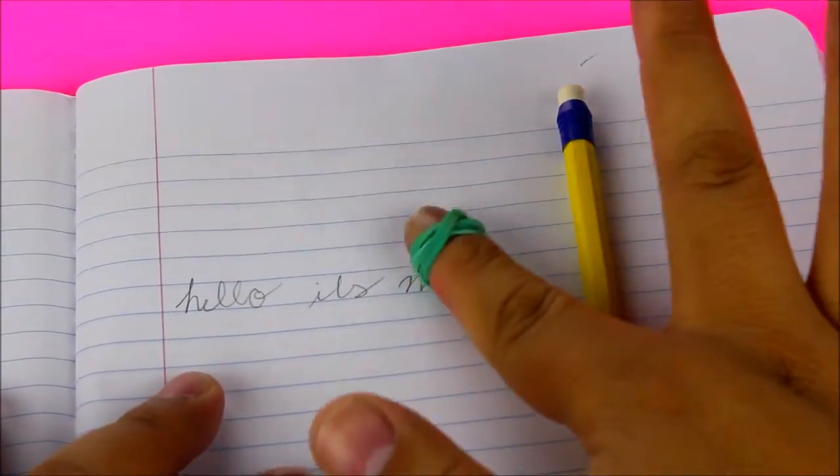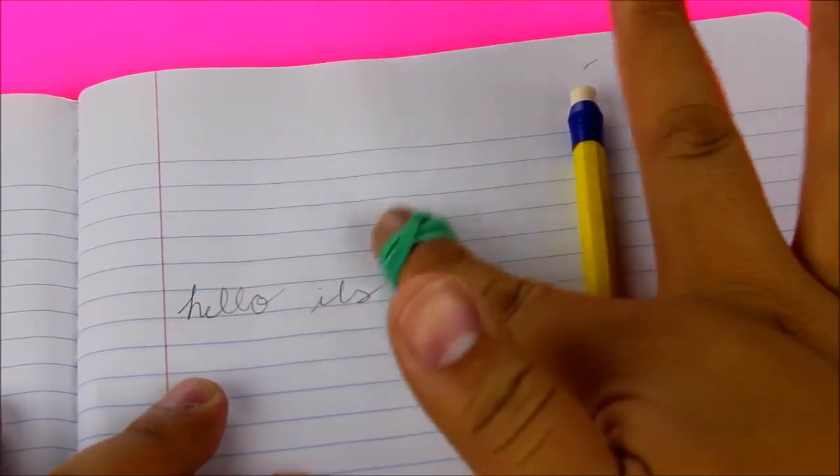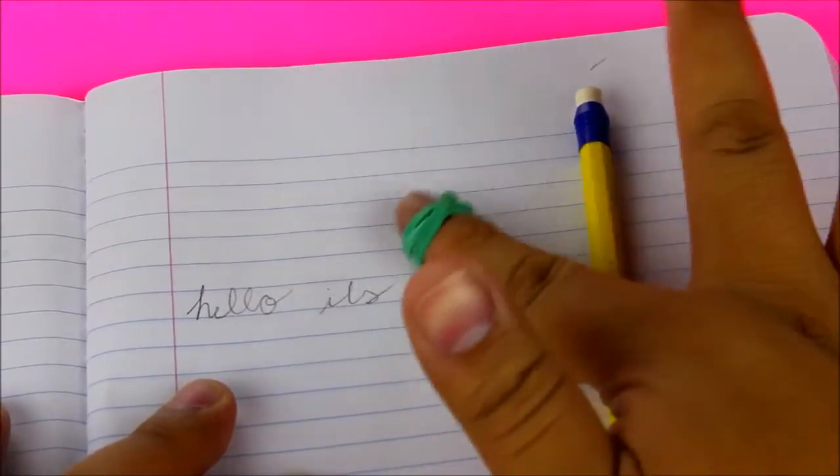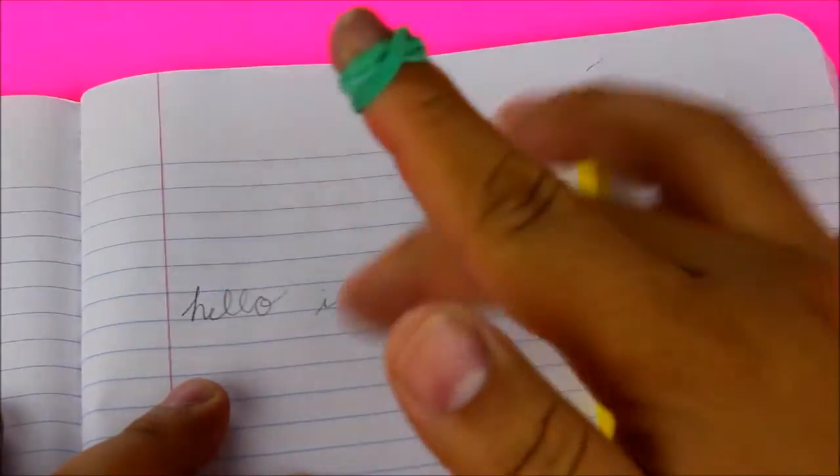Just rub your rubber band finger over what you want to erase, and it works like an actual eraser because it is rubber, of course, which is amazing. I wish I knew this while I was in school honestly, because it would have saved me a lot of time.